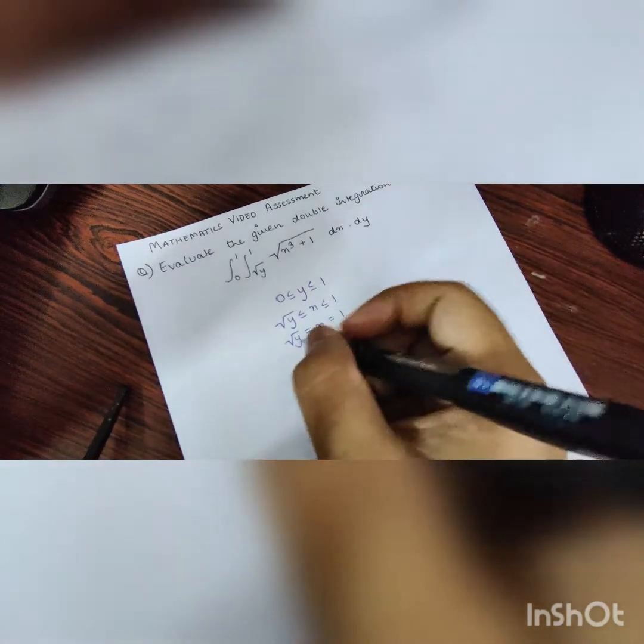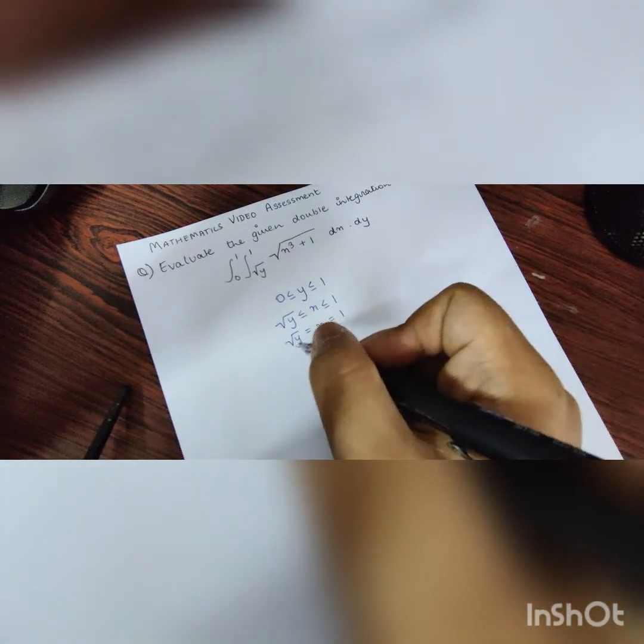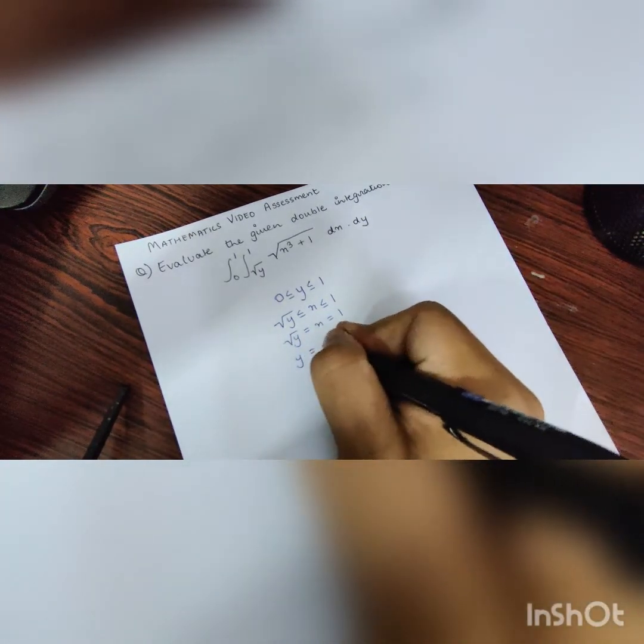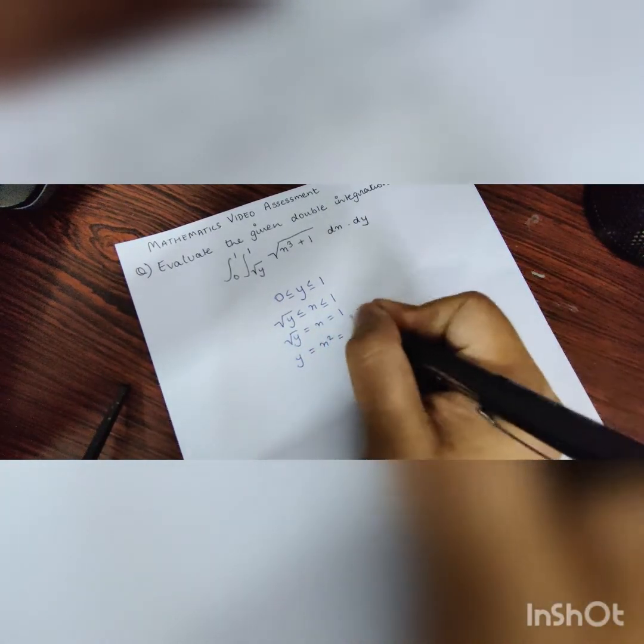Now, I can square all of them, which will lead me to have y is equal to x squared and 1 squared is 1.